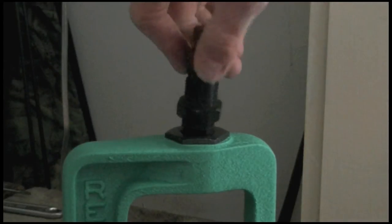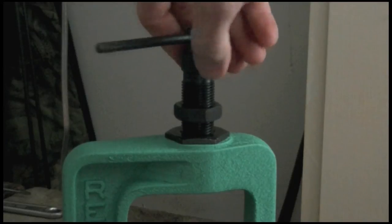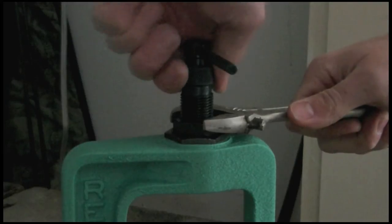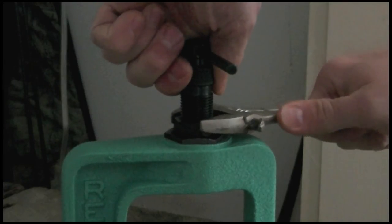Now when you're setting the die, you want that lock nut tight. There's a reason why it's extra big. Because it needs to be tight. Or else it's going to slip on you and move and mess your setup.